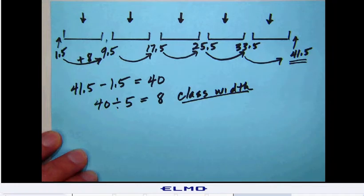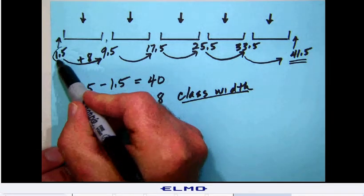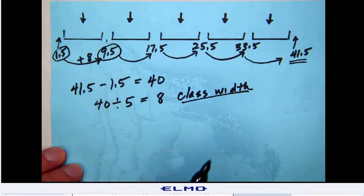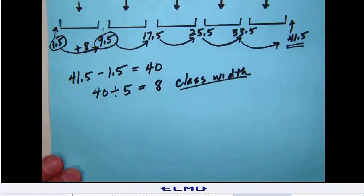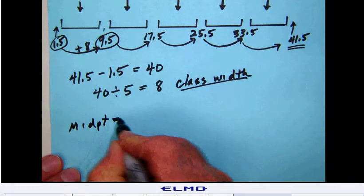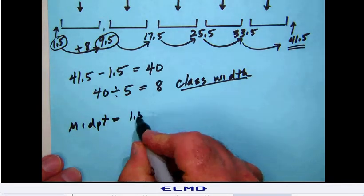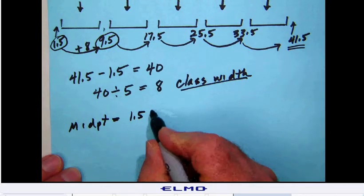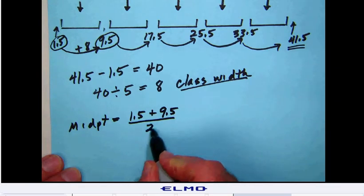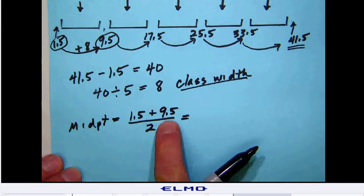Now, the way to do that is to take your class boundary at the beginning, your class boundary at the ending, add those together, and divide by 2. So you're going to take, in the first case, 1.5 plus the 9.5, add them together, divide by 2. So 1.5 plus 9.5 is going to be 11.